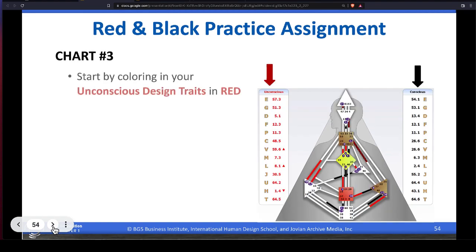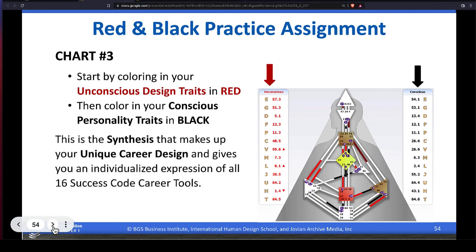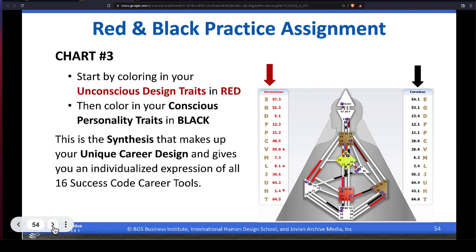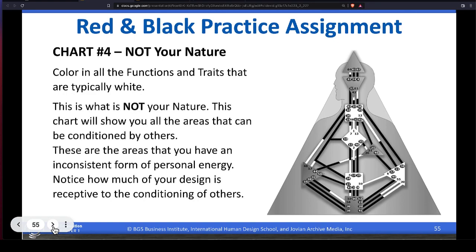These are your conscious personality traits. These are, in esoteric terms, we would say the soul's imprint. But here in BG5, this is what you're working with. These are the tools in your toolkit as far as your conscious personality design. Remember, you are not just that. You are so much more. You are a holism. So, let's color in the holism in chart number three. You have your red chart design first, color that in, and then you do your black. And then, looking at all of it, recognize that we're going to explore your individualized expression of all 16 career success tools, your codes in this course. The red and black practice assignment, last piece, not your nature. You can see that there's a lot of things colored in there that are not this person's nature. More often than not, you're going to see way more places that you are nurtured by life. Color in the functions and traits that are typically white. Not your nature. Where you're inconsistent. It's not where you make decisions. Notice how much of your design is receptive to the conditioning by others.